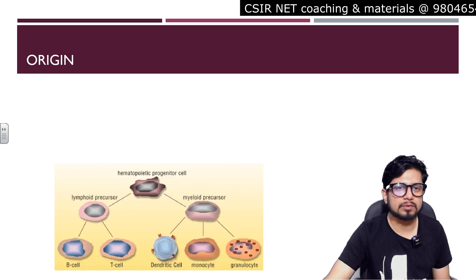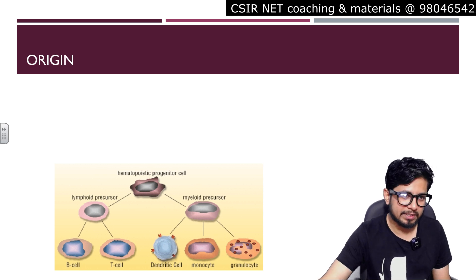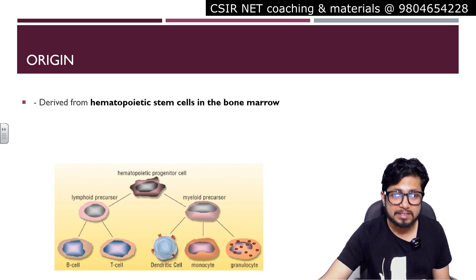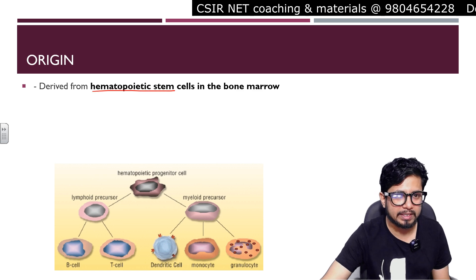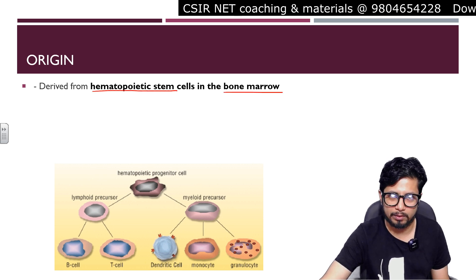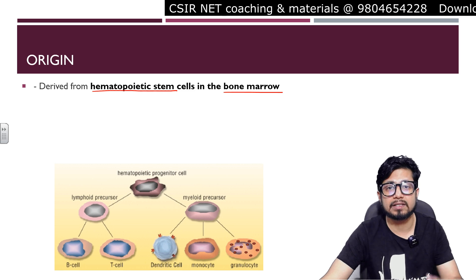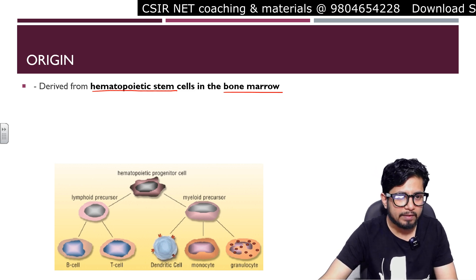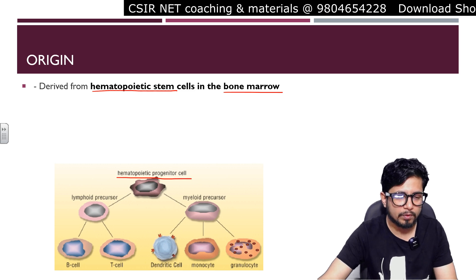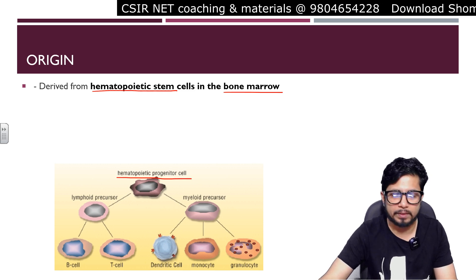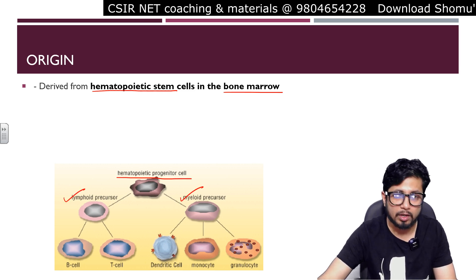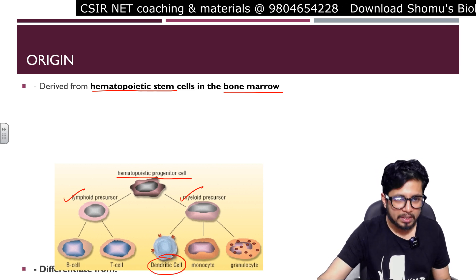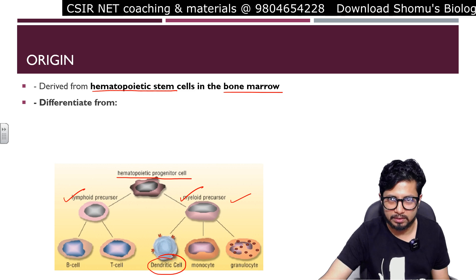The very first thing is the origin of dendritic cells, which in simple words is from hematopoietic stem cells in the bone marrow. It is produced inside the bone marrow like many other variety of cells. We know that we have a hematopoietic progenitor cell from where we have two separate progenitors: lymphoid progenitor and myeloid progenitor.